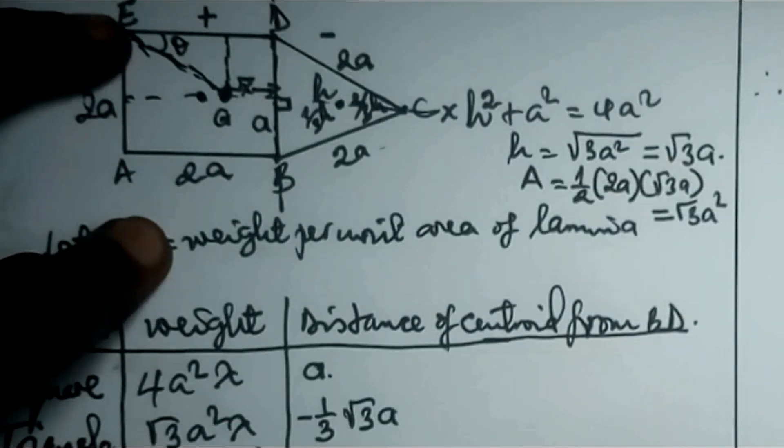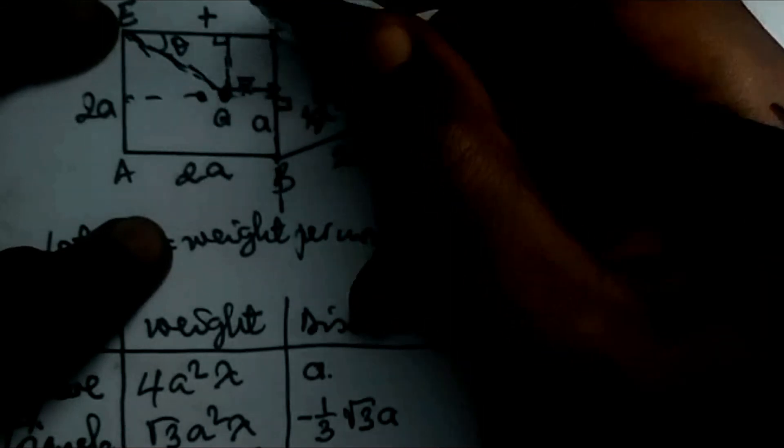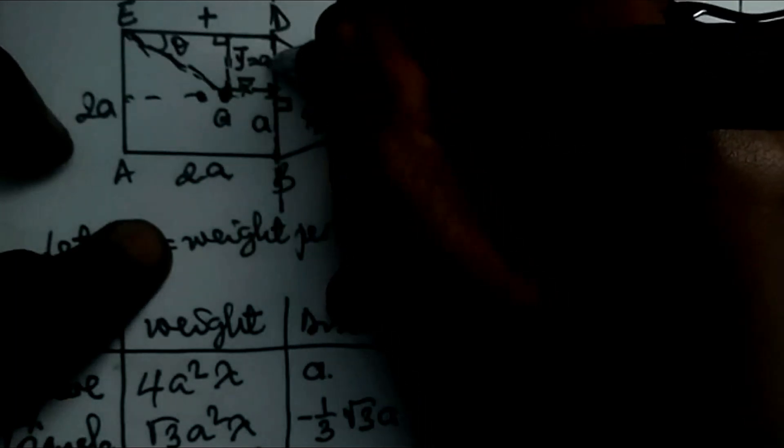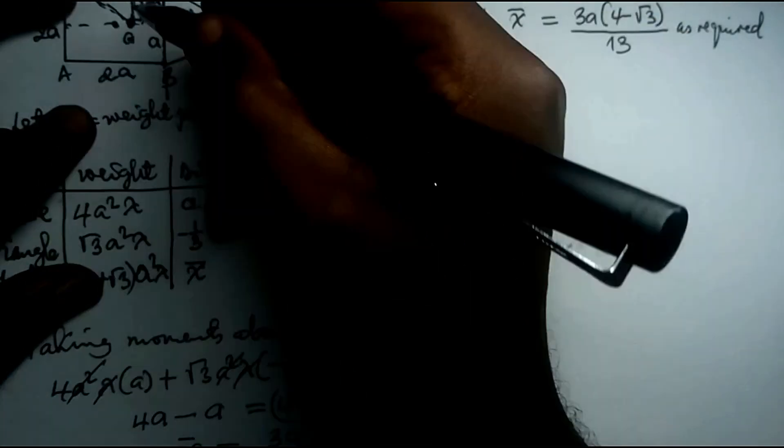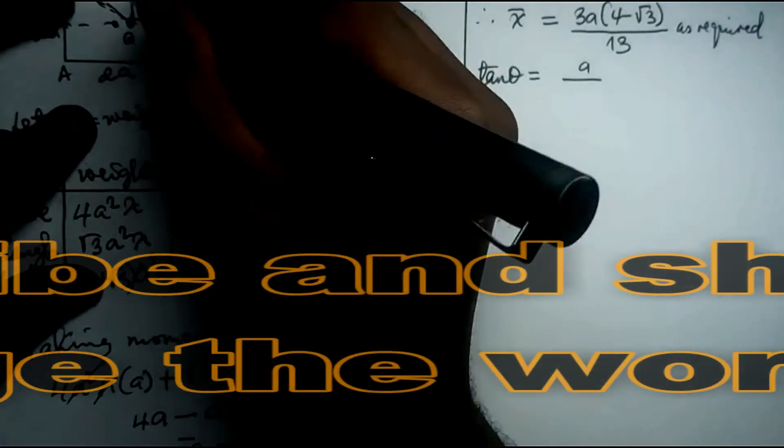Draw a perpendicular from G to the side ED — this gives the right triangle needed for tan θ. The perpendicular distance (opposite side) equals a, because the line of symmetry is the midpoint of BD = 2a, so the distance from the midpoint to ED is a. Call this ȳ = a. The adjacent side is the distance from E along ED to the foot of the perpendicular, which equals 2a − x̄. So tan θ = a / (2a − x̄).